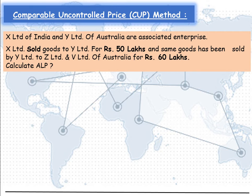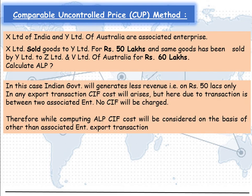Calculate the arms length price. Y Limited of Australia sold goods, which were supplied by X Limited, to Z Limited and V Limited for Rs 60 lakhs and earned a profit of Rs 10 lakhs, which is outside the control of the Indian government. In this case, the Indian government will generate less revenue, that is, only on Rs 50 lakhs.